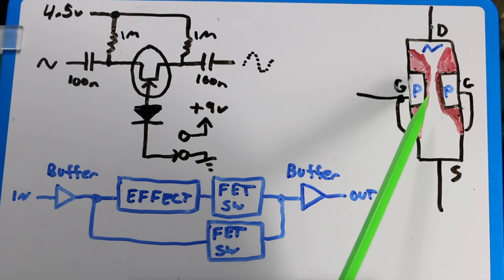Whichever end of the drain source channel is more positive is going to experience more of the pinch-off as the depletion layers expand and narrow the channel. If the drain is more positive than the source, while the gate is reverse biased with a negative voltage, this P-N junction is going to be more strongly reverse biased than the gate to source. So there's going to be a larger depletion area built up here, creating a narrowing in the channel compared to the source side.